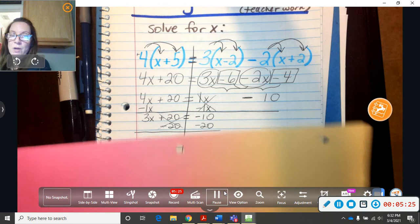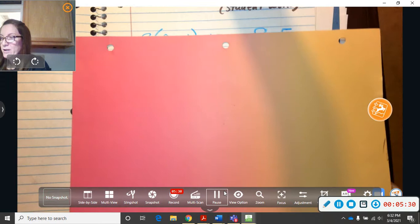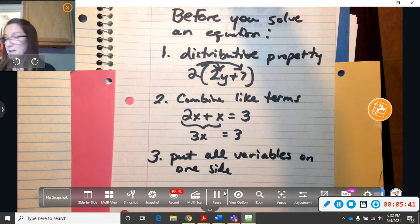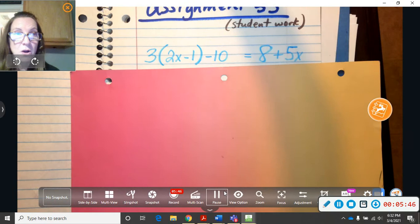I'm going fast because this is a review. Even though it looks really hard, you've done all this before. Now here's your problem. Same stuff. So remember, before you work an equation, you may have to do the distributive property first, combine like terms, and move all the variables to one side. You may have to do all of that before you even start the two-step equation.